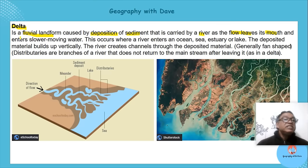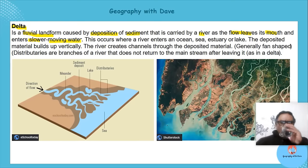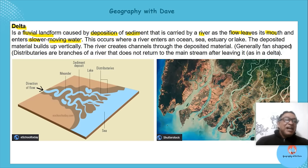As the river enters slower-moving water it slows down, losing energy. If it loses energy its carrying capacity will be less. What happens here is that as it deposits, it's going to create little sand islands.